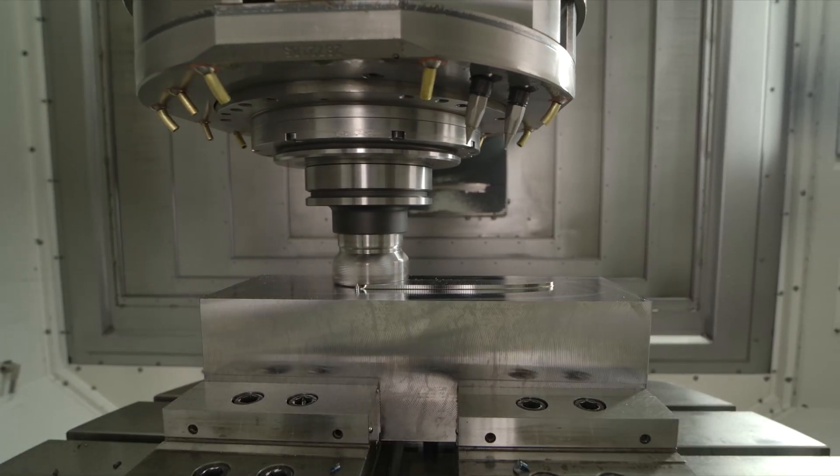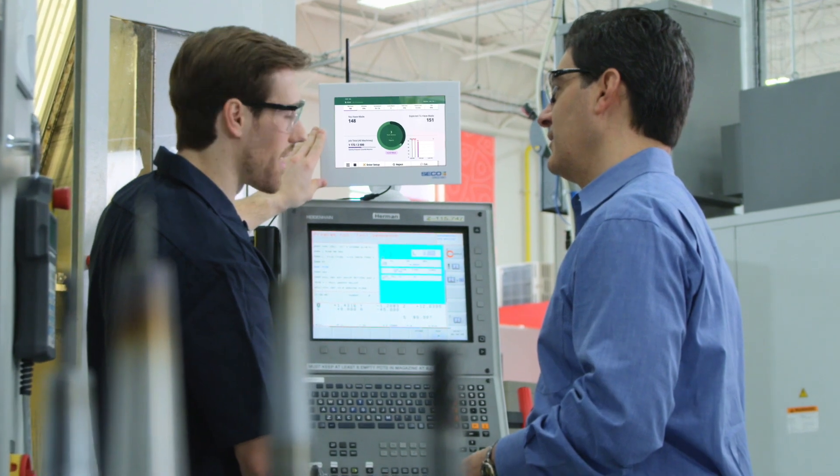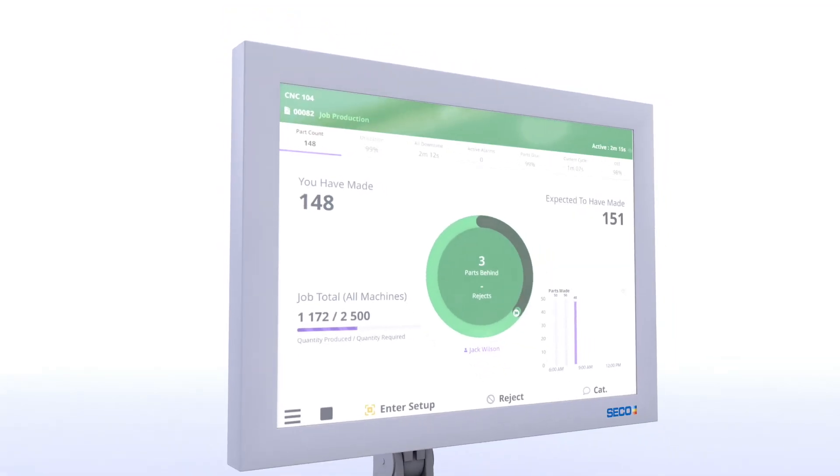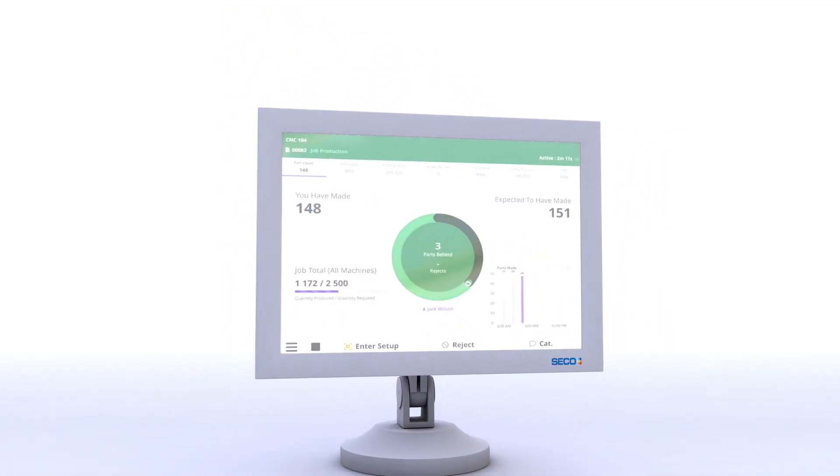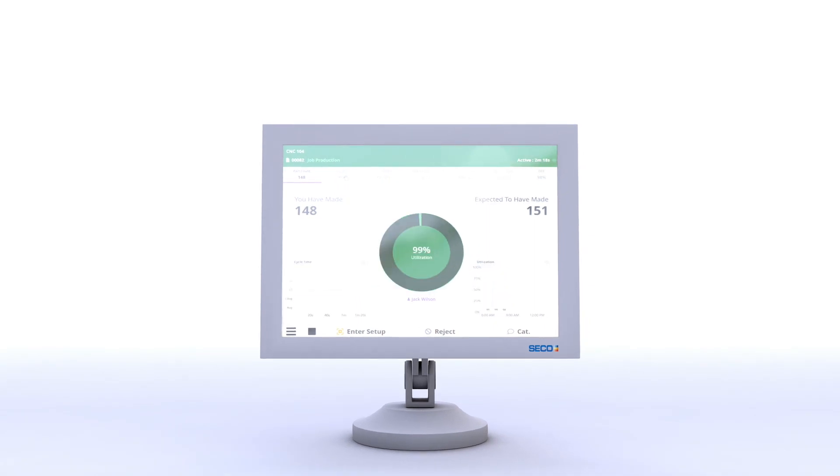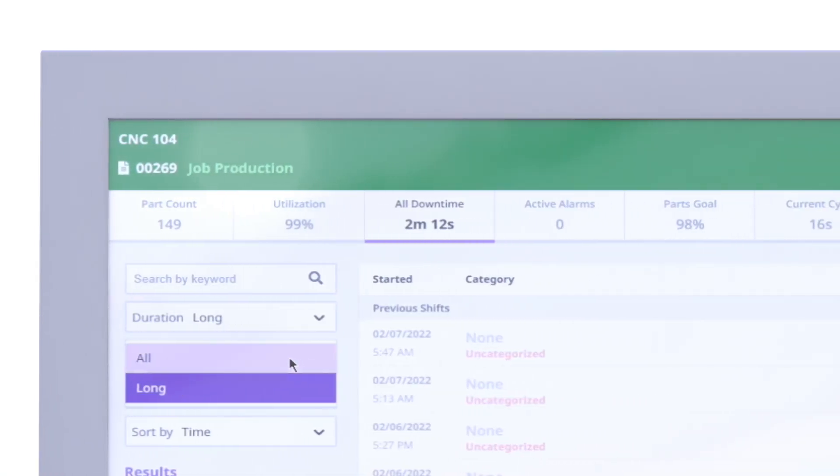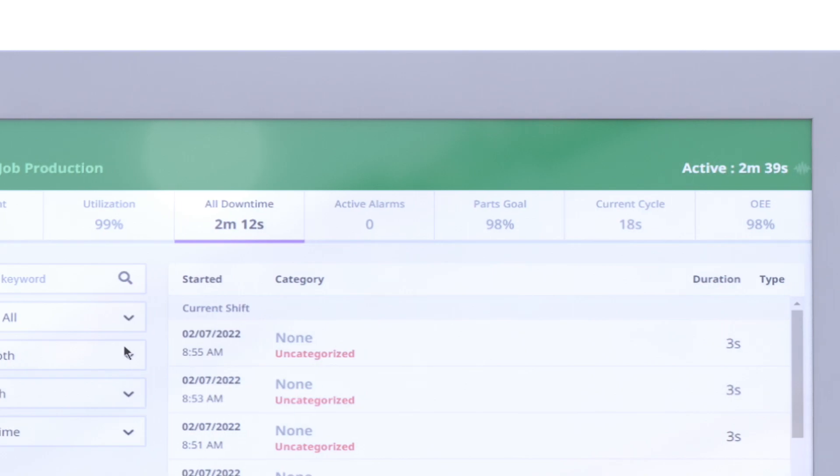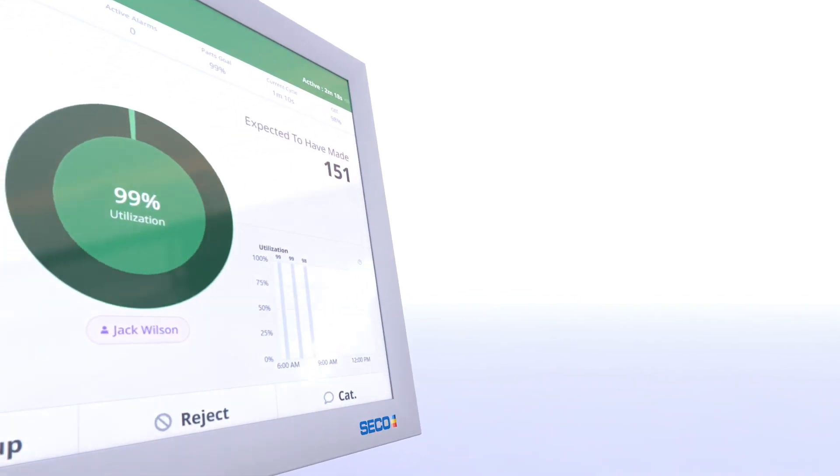Real-time data about machine performance and part production enable manufacturers to pinpoint the cause of downtime and production bottlenecks. Data-driven insights combining real-time machine performance and information from operators help to reveal the real root causes of production problems.